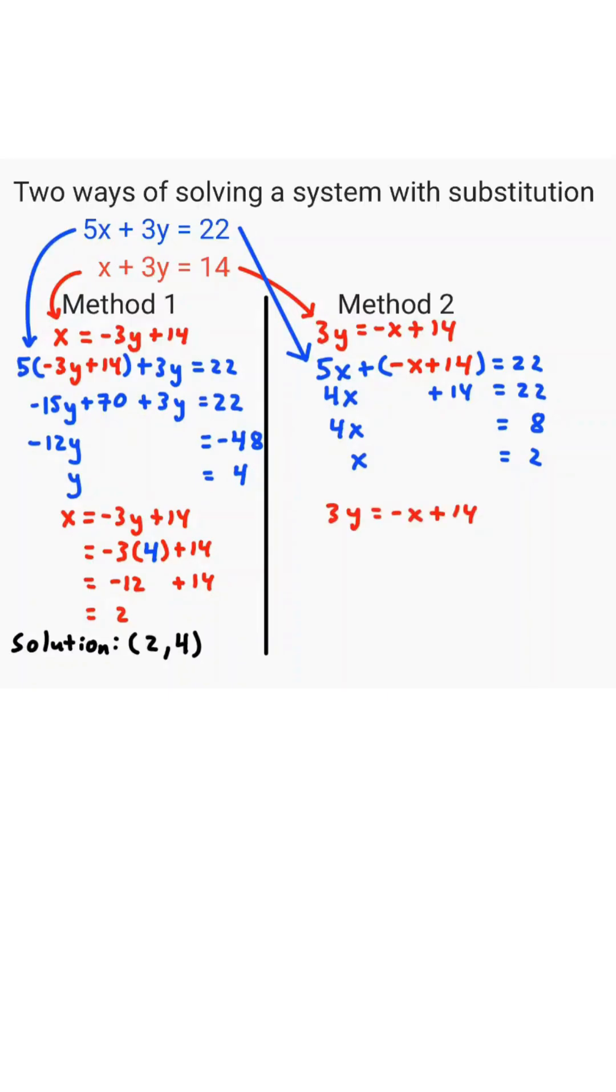To solve for y, we'll take that 3y equals negative x plus 14. We'll substitute x equals 2. So negative 2 plus 14 is 12, and 3y equals 12, meaning that divide both sides by 3, y equals 4. So our solution is 2 comma 4.